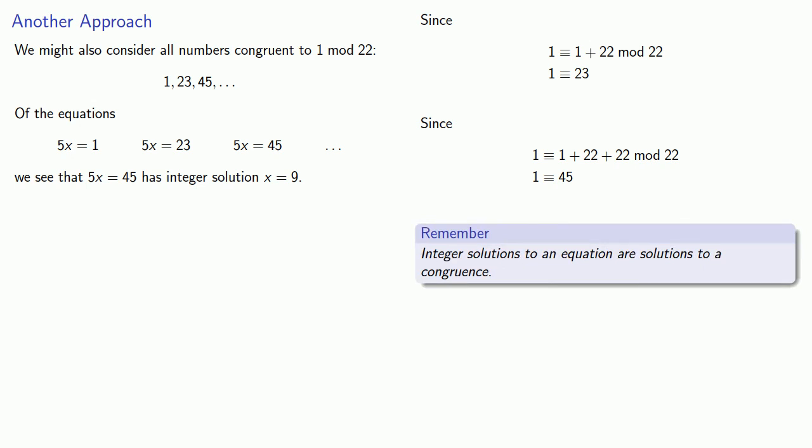So I have an integer solution to 5x equals 45. So x equals 9 solves the congruence 5x congruent to 45 mod anything you like. But in this case, we'll take mod 22. But since 45 is congruent to 1, that means that x equals 9 also solves the congruence 5x congruent to 1 mod 22.